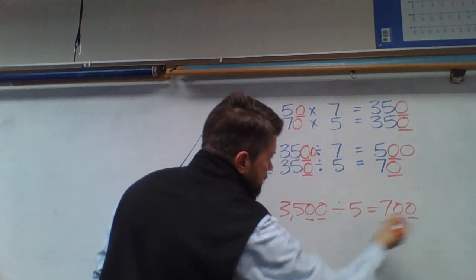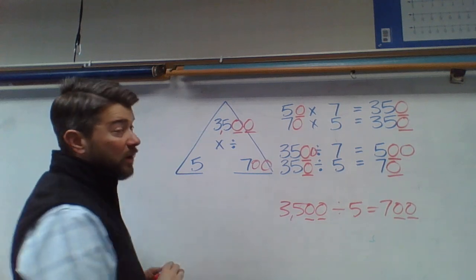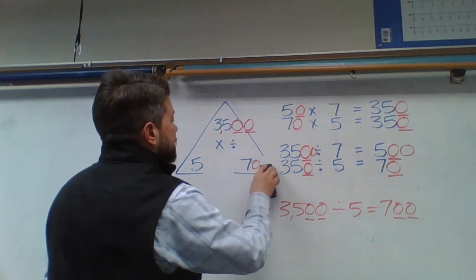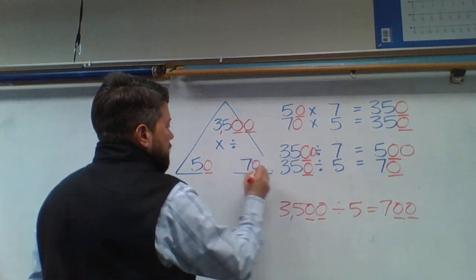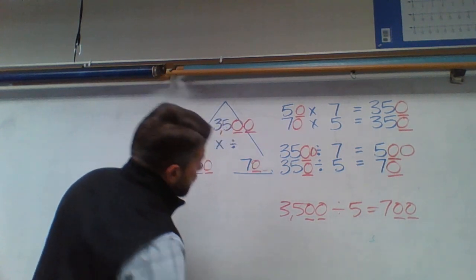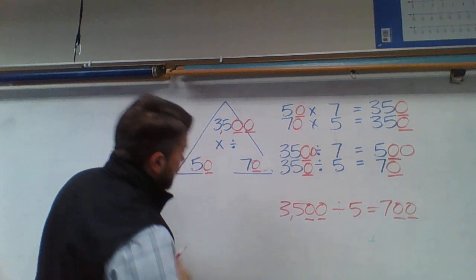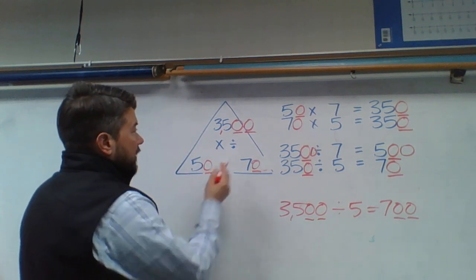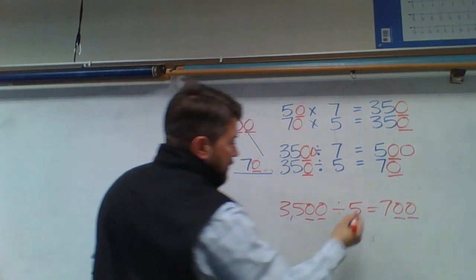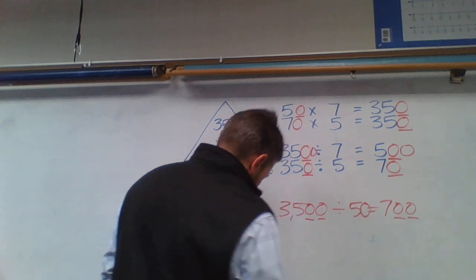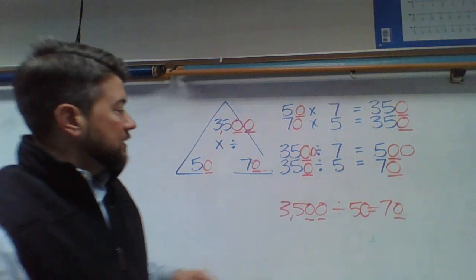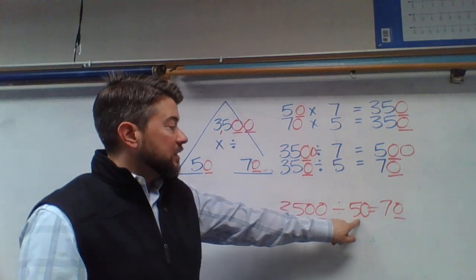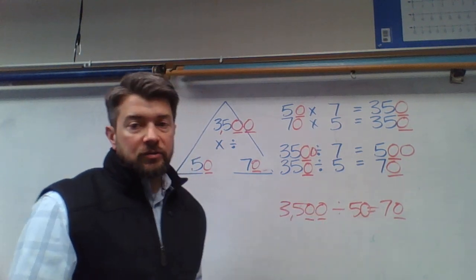Two 0s on this side, two 0s on that side. Or, what I can do is split the difference. I can put a 0 behind each of my factors, where the numbers are at the bottom of my fact family triangle. So then I would have 3,500 divided by 50. That would give me a quotient or answer of 70. 3,500 divided into 50 groups would give me 70 in each group.